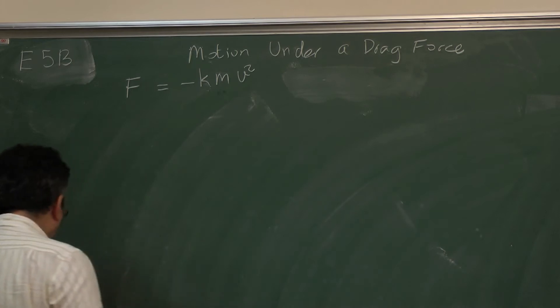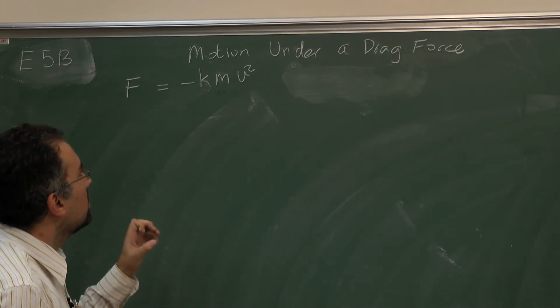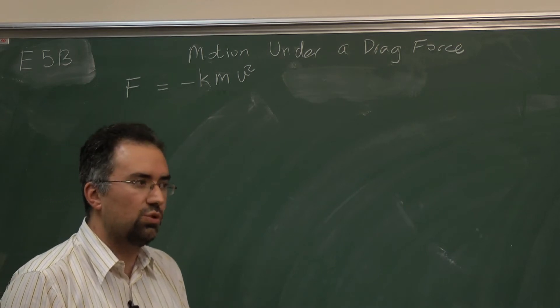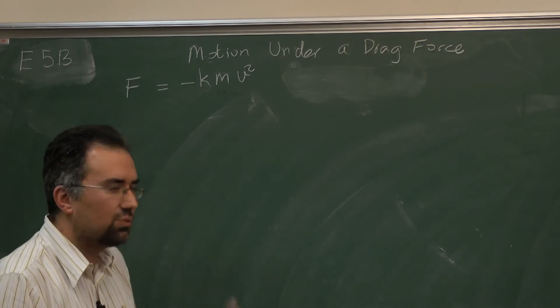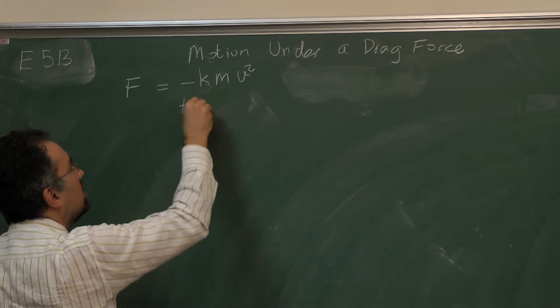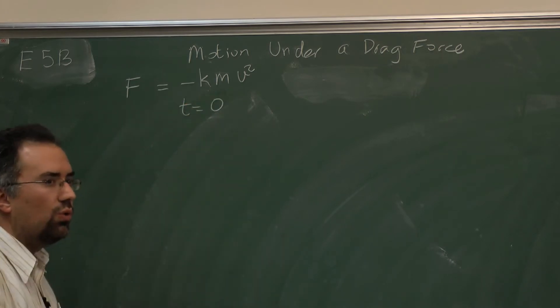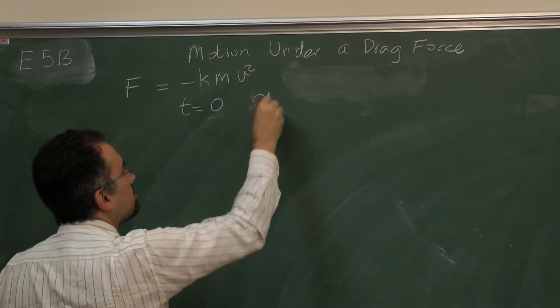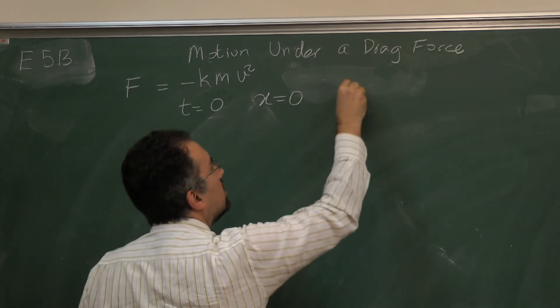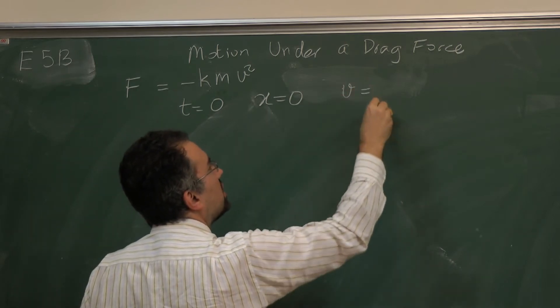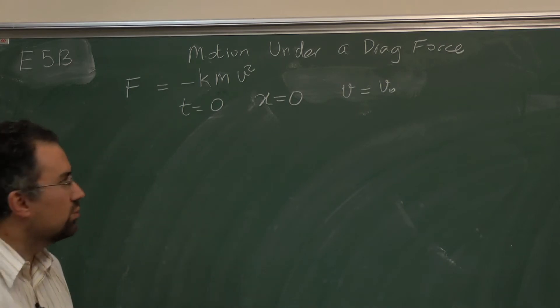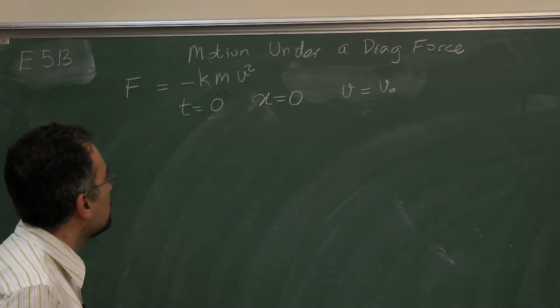Now so you're given the force. Of course if it's a resistive force the object must be moving to start with. So the initial conditions are given as at time t equals zero, the position of the object is given as zero and the velocity of the object is given as v zero.